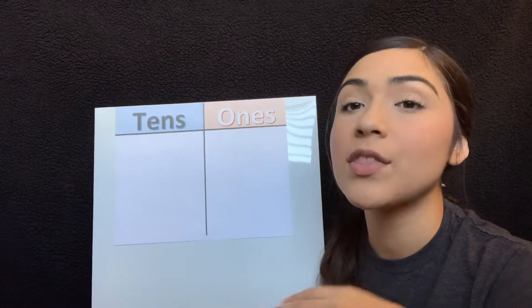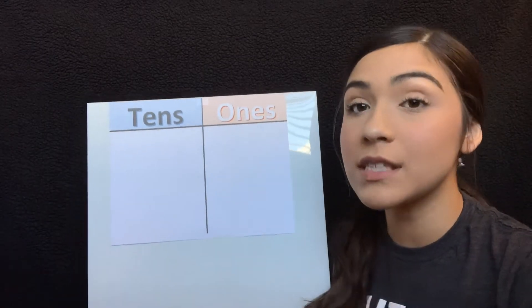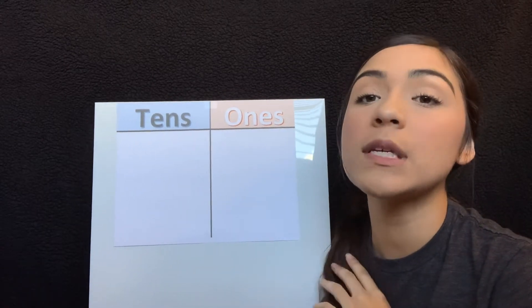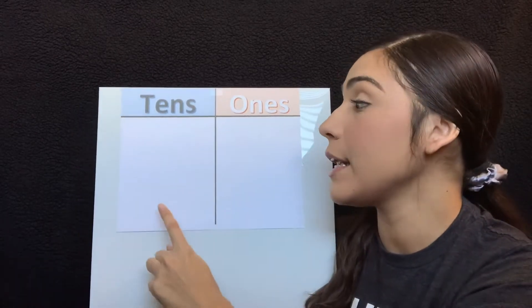Today we will be learning how the two digits of a two-digit number represent tens and ones. Let's get started. Do you guys know your tens and ones place? Well that's okay. After you're done watching this video you will. So first let's start by making our tens and ones place. Now that we have our T-chart, there is one rule when writing our digits in the chart: there can only be one digit in each place.